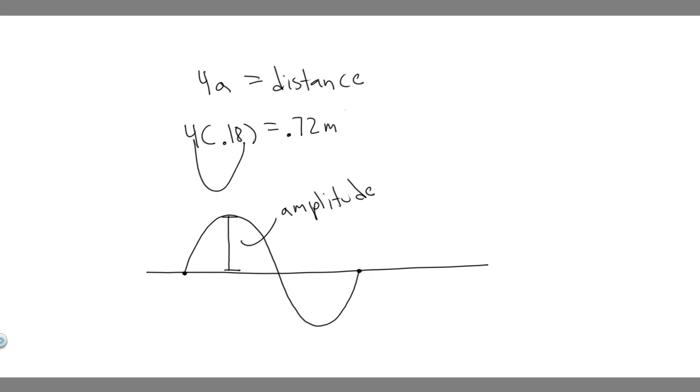Because we don't know the length of this. We just know the amplitude. So all you have to do is just multiply by four because it's going to travel the amplitude four different times.